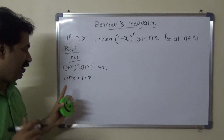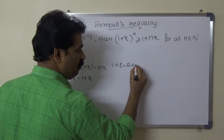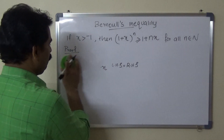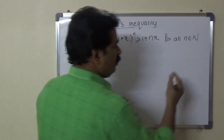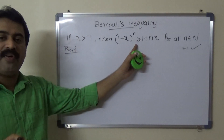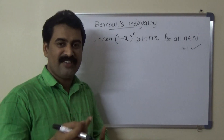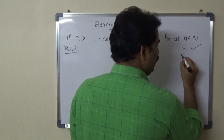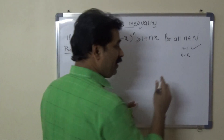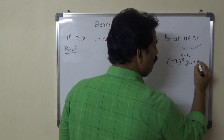This result is true for n equals 1, since LHS equals RHS. Next, we assume this result is true for n equals k, where k is any natural number. This assumption means we can write: (1 + x) raised to k is greater than or equal to 1 + kx.